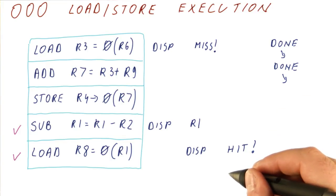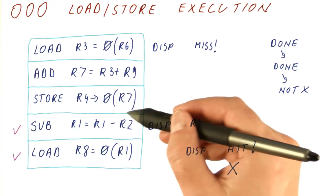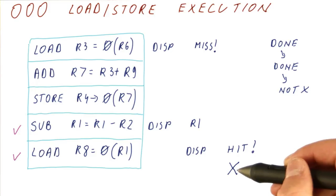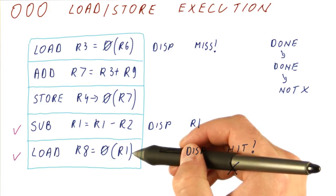If this resolves to not x, meaning the address addressed by R7 is not the same address as the one addressed by R1, then everything is going to be fine. The store is storing to some other address. We have loaded something else entirely and everything is fine.